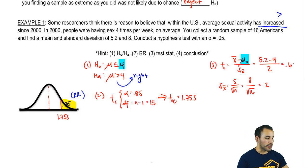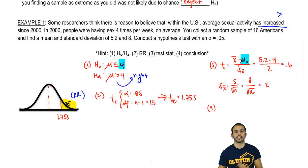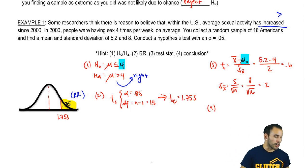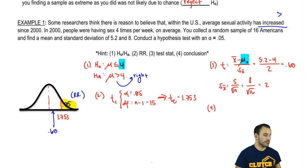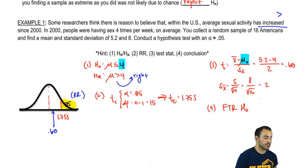We base that conclusion off of where does our test statistic lie in this rejection region versus everything else, or if you want to call it the non-rejection region. So we have 0.6, and that lies over here. So are we in the rejection region or not in the rejection region? We're not in the rejection region, a.k.a. we fail to reject H0.